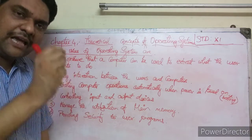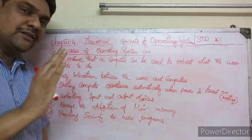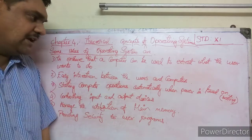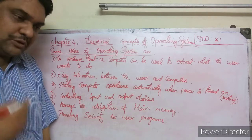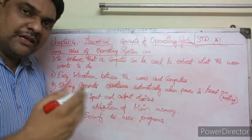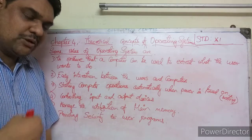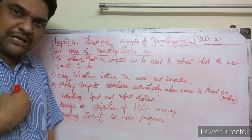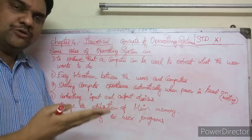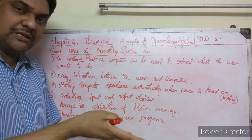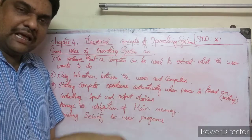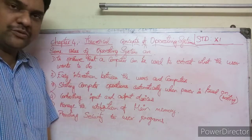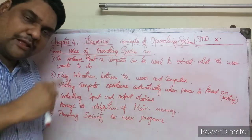The second use is easy interaction between the user and the computer. The operating system sits in the middle between the user and the computer. The user speaks in English, but the computer understands only binary language, so the operating system acts as a translator — like an interface or middleman.